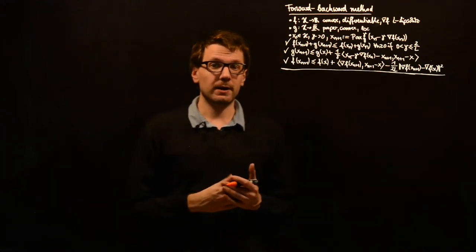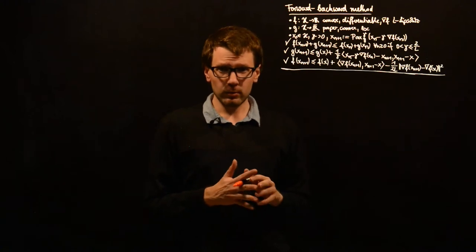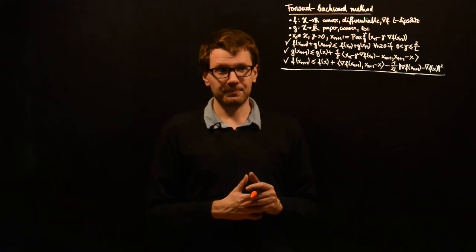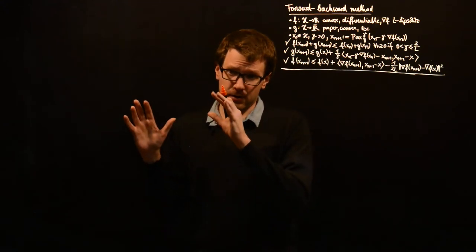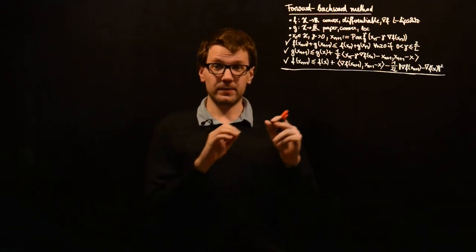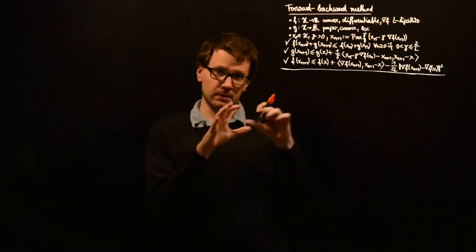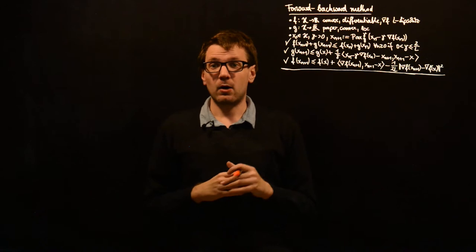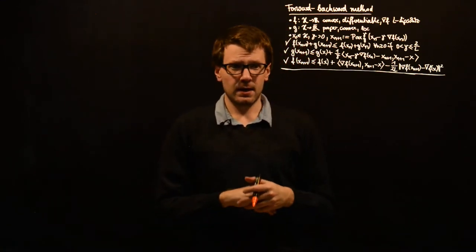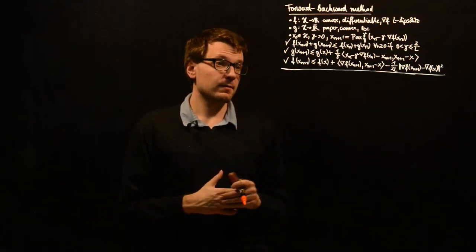Let us now continue our analysis of the forward-backward method by using the two inequalities which we derived in the last video. Our goal will be to establish an inequality which has the telescoping property, which we already saw in the analysis of the sub-gradient method. This telescoping property means that we have one expression on one side of the inequality and the same expression with n+1 instead of n on the other side, so that when we sum up these inequalities, all intermediate terms cancel except for the very first and the very last one.